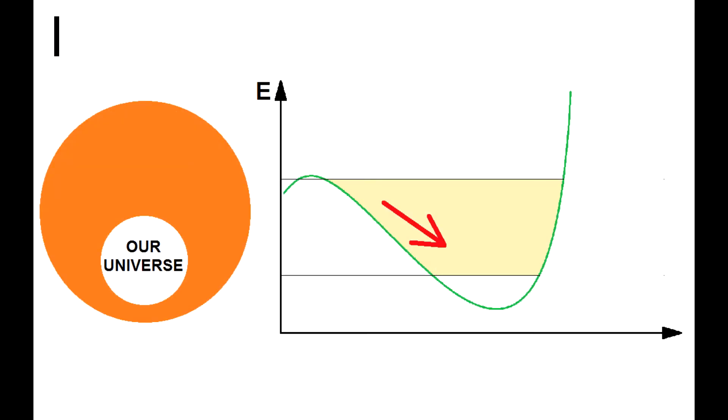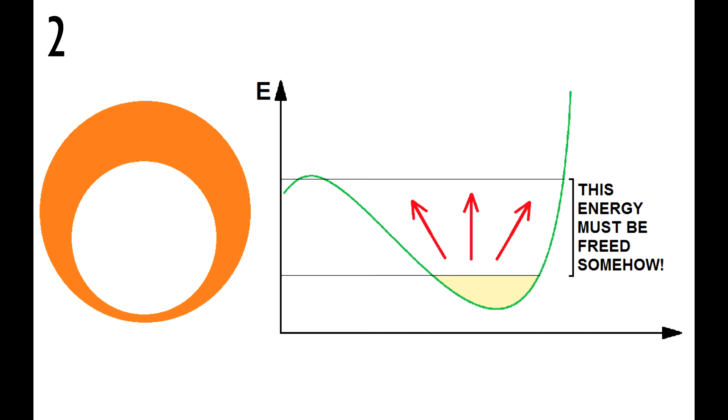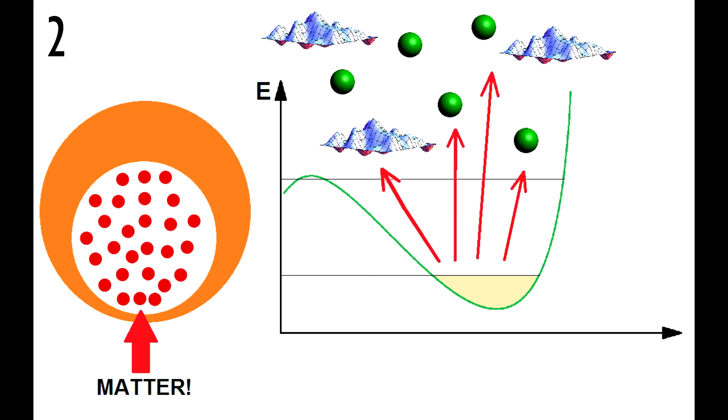Number one, in the falling stage, the inflaton generated repulsive gravity, expanding the space it was in enormously. Number two, once reached the minimum energy level, the inflaton began to free the original energy it had in the false vacuum. And by freeing energy, fields and particles were created.